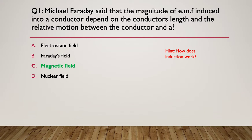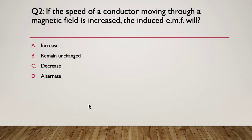Question two. If the speed of a conductor moving through a magnetic field is increased, the induced EMF will do what? A: increase, B: remain unchanged, C: decrease, or D: alternate. Pause here.